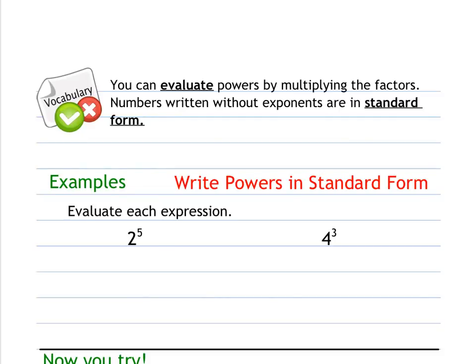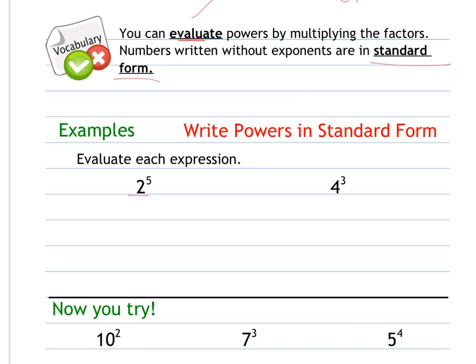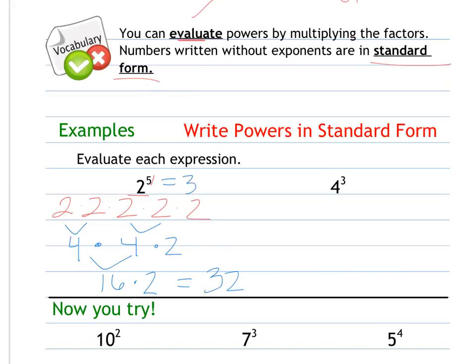You can also evaluate powers by multiplying the factors — actually doing the multiplication. Numbers written without exponents are in standard form, as opposed to exponential form. Evaluate means to find the value. For two to the fifth, that's two times two times two times two times two. Two times two is four, times two is eight — actually, four times four is sixteen, times two is thirty-two. So two to the fifth power is thirty-two.